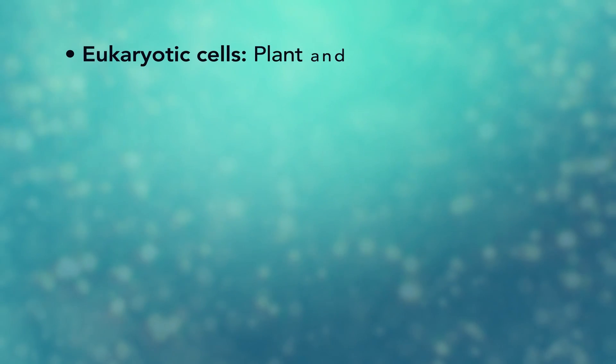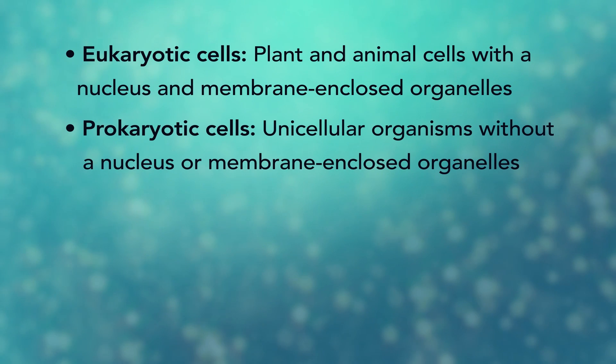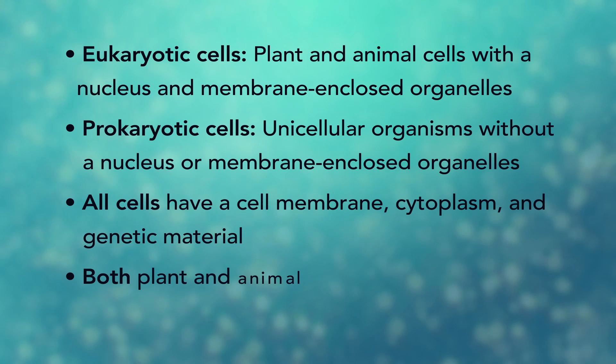In summary, remember, eukaryotic cells are plant and animal cells with a nucleus and membrane-enclosed organelles, while prokaryotic cells are unicellular organisms without these things. All cells have a cell membrane, cytoplasm, and genetic material. And even though only plant cells have chloroplasts, both plant and animal cells have mitochondria.